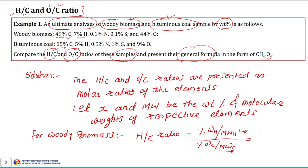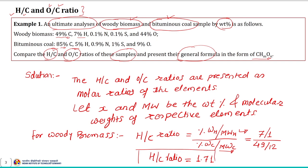We know the percentage weight of hydrogen in wood biomass is 7%, with a molecular weight of 1, and for carbon the value is 49% with a molecular weight of 12. Once we solve this, the H/C ratio for wood biomass comes out to be 1.71.